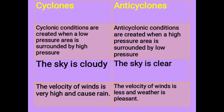Distinguish between Cyclones and Anticyclones. 1. Cyclonic conditions are created when a low pressure area is surrounded by high pressure; Anticyclonic conditions are created when a high pressure area is surrounded by low pressure. 2. In cyclones, the sky is cloudy; in anticyclones, the sky is clear. 3. In cyclones, the velocity of winds is very high and causes rain; in anticyclones, the velocity of winds is less and weather is pleasant.